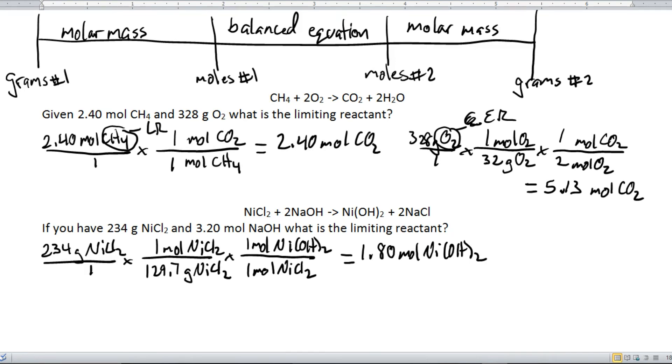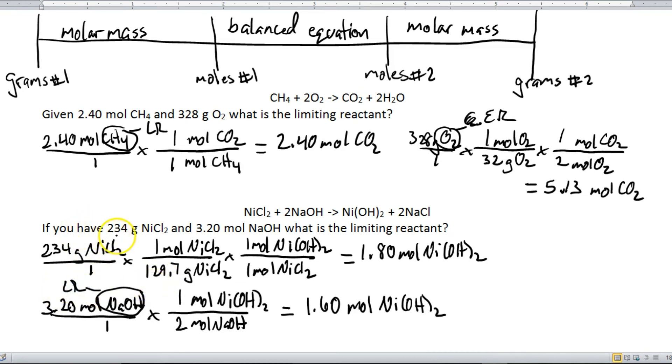Next given is 3.20 moles of NaOH over 1. Now this is just a simple moles to moles conversion here. So moles of NaOH on the bottom. Moles of the nickel 2 hydroxide on top. And this is a 1 and that is a 2. Alright, so 3.20 divided by 2 equals 1.60 moles of the nickel 2 hydroxide. Okay, so now that I've done my two calculations I'm just going to compare. Obviously 1.60 is a smaller amount, meaning that sodium hydroxide here, this is our limiting reactant, leaving the nickel 2 chloride to be our excess reactant.